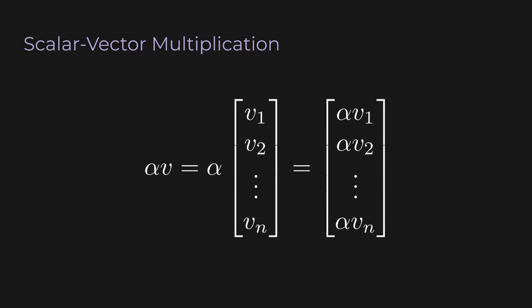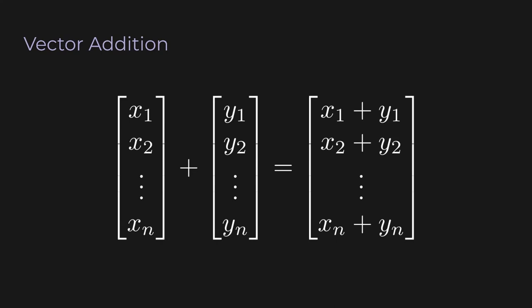Now that we've developed some intuition about scalars and vectors, let's see how they interact. When you multiply a vector by a scalar, you usually write the scalar in front. So alpha times v is just another vector where all entries are multiplied by alpha. For vector addition, if you have two vectors x and y and you add them together, you just add the corresponding entries: the first entry of the output is x1 plus y1, the second is x2 plus y2, and so on.